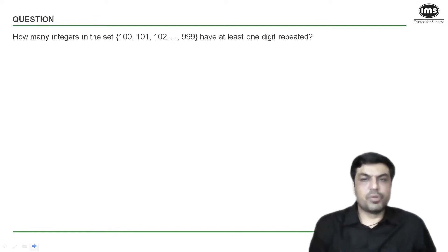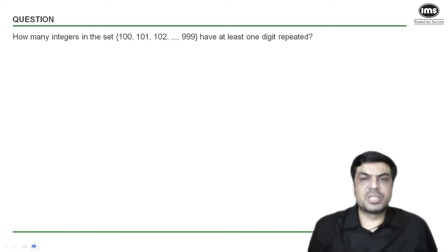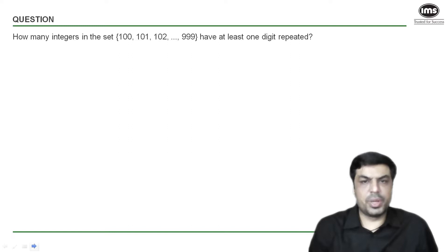We've got a question from computation and combination where we have the set of all three-digit numbers from 100 to 999, and we want to find out how many of these numbers have at least one digit repeated.